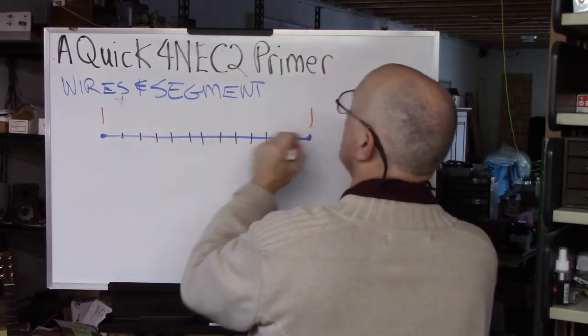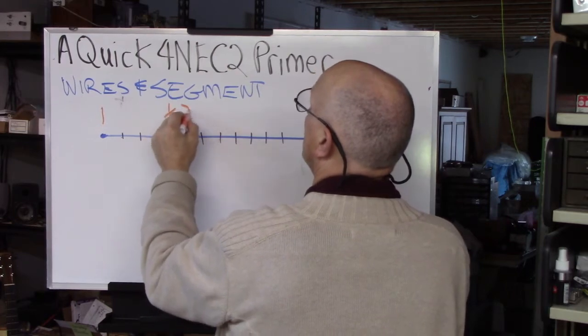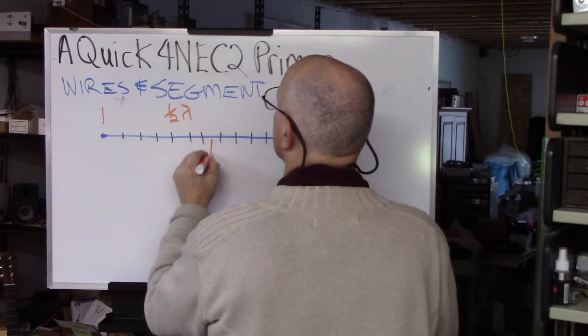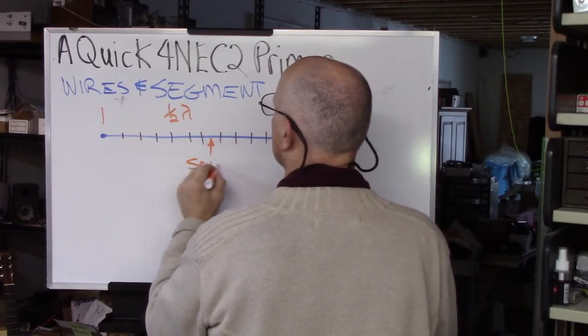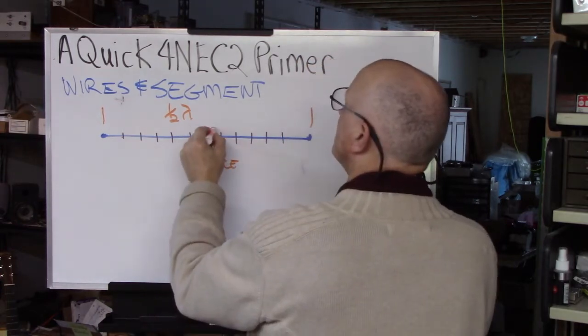is you draw a single wire, which is the entire, let's say you're doing a half wave dipole. This is a complete half wave long. And then you insert your source